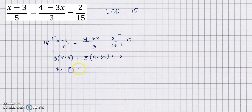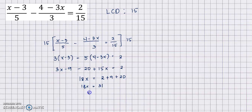Distributing gives 3x minus 9 minus 20 plus 15x equals 2. Combining similar terms: 18x equals 2 plus 9 plus 20, so 18x equals 31, and X equals 31 over 18.